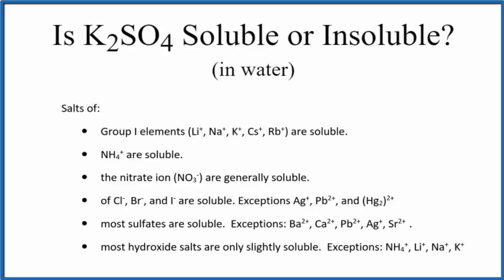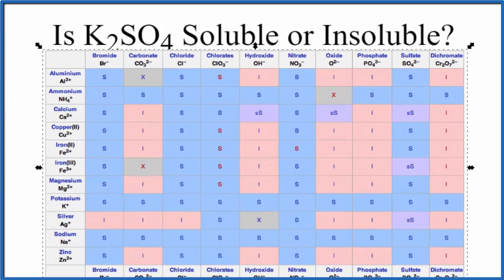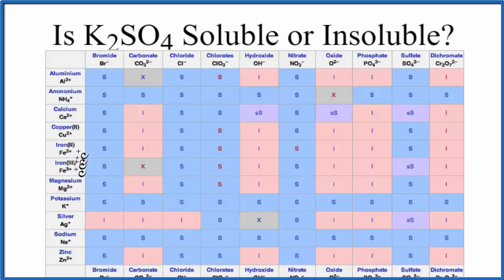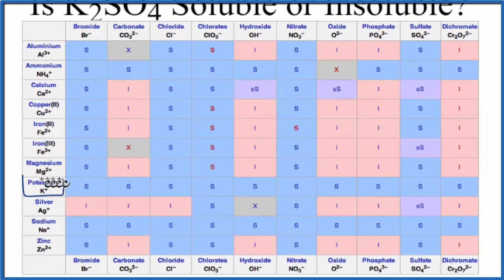We could also look at a solubility chart. So on the chart here, we find potassium on the positive ions, right there, that's potassium, and then negative ions, the anions, we're looking at the sulfate. So here's the sulfate ion.